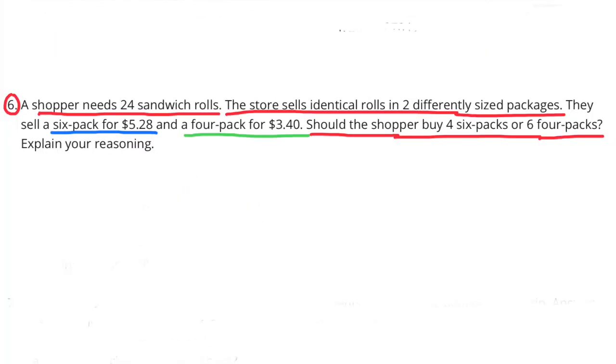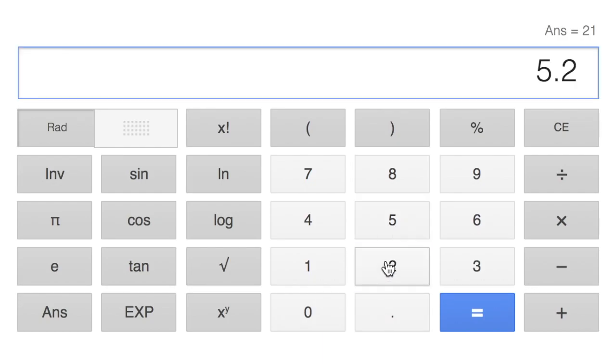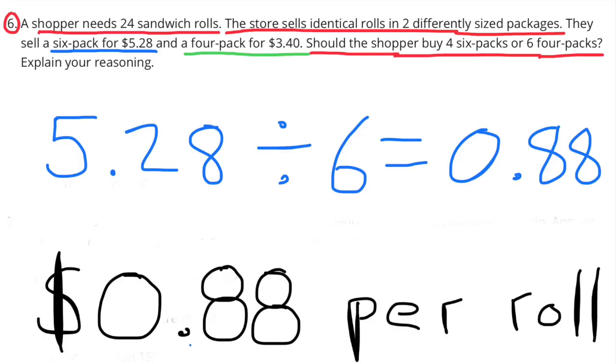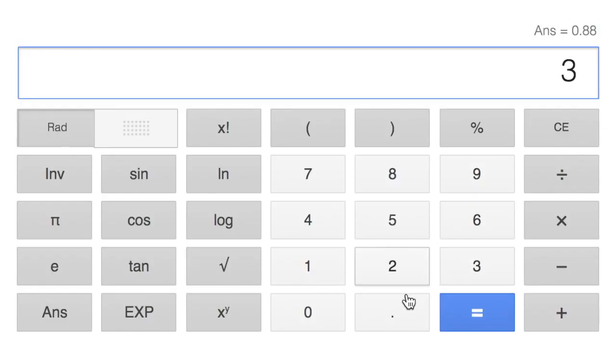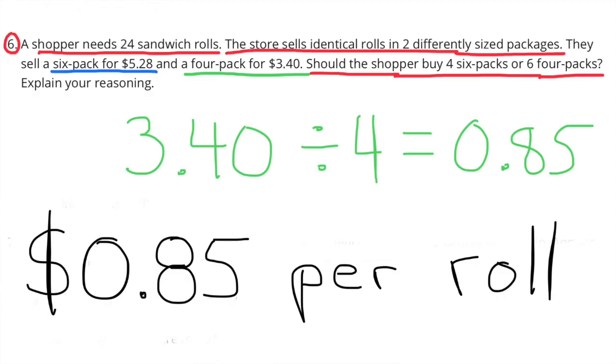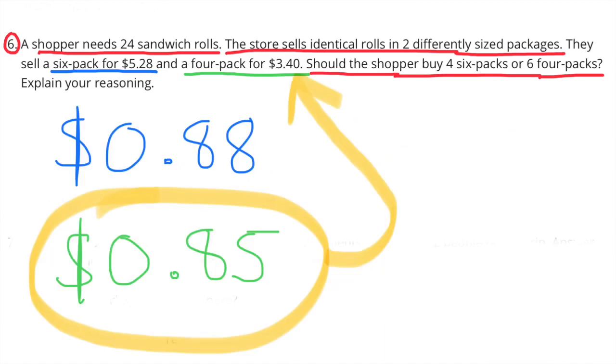Number 6. A shopper needs 24 sandwich rolls. The store sells identical rolls in two differently sized packages. They sell a 6-pack for $5.28 and a 4-pack for $3.40. Should the shopper buy 4 6-packs or 6 4-packs? Explain your reasoning. $5.28 divided by 6 for the 6-pack equals $0.88 per roll. The 6-pack sells the rolls for $0.88 each. $3.40 divided by 4 equals $0.85. The 4-pack sells the rolls for $0.85 each. The best deal is the 4-pack, selling the rolls for $0.85 each.